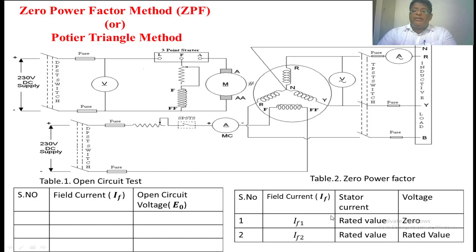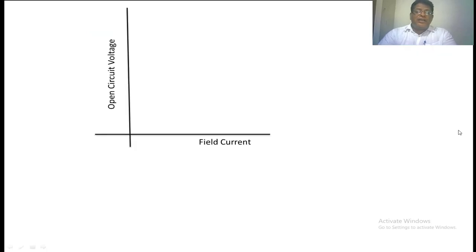These two readings are very important to construct the Potier triangle along with the OCC data. On the x-axis you take the field current and on the y-axis you take the open circuit voltage. With the help of the ten readings, you draw the OCC curve.